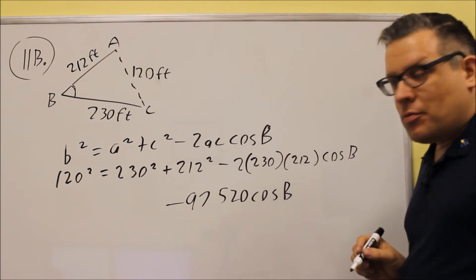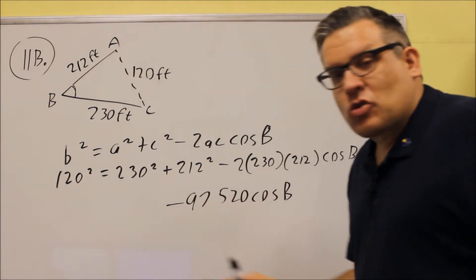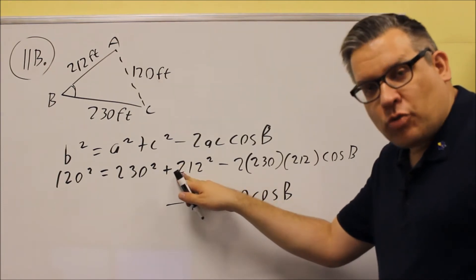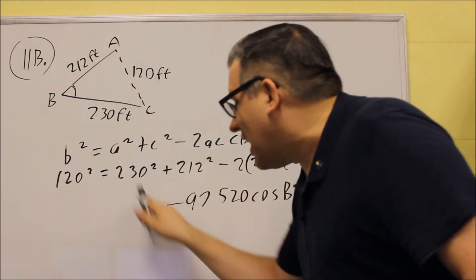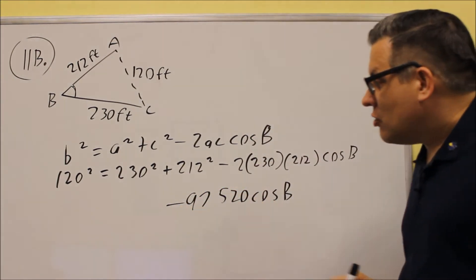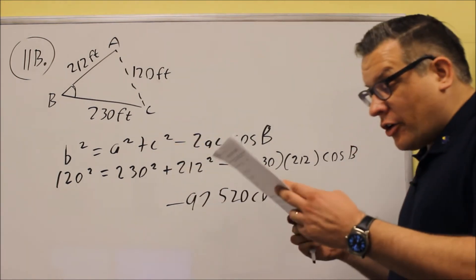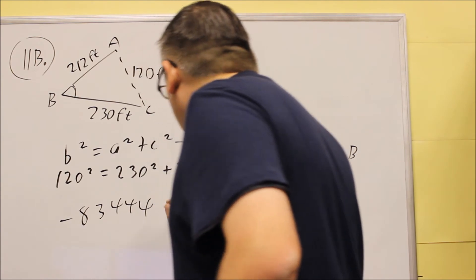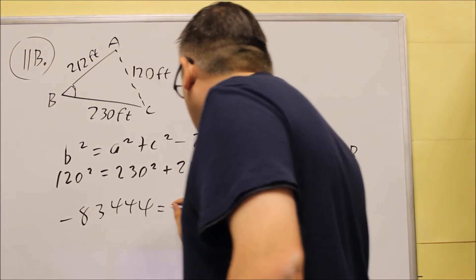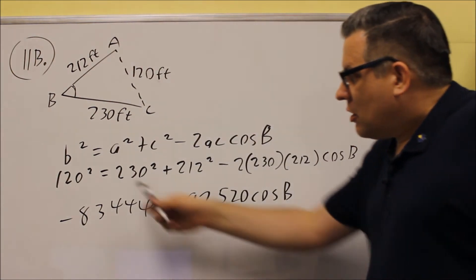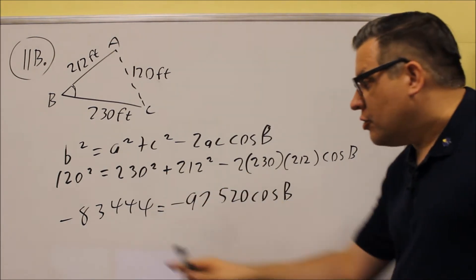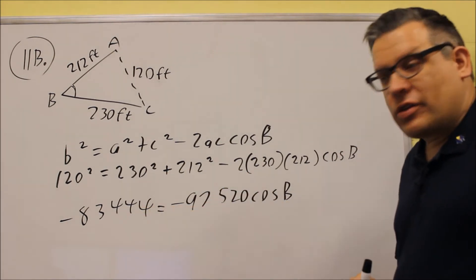So, that would be this section here. Now, if I take 120 squared and subtract 230 squared and subtract 212 squared from it, I'll get a number on the left-hand side. You can put that into your calculator. I'm not going to show all the intermediate steps for that. But, if you did it correctly, then you should get this. 120 squared minus 230 squared minus 212 squared. You'll get this number right there.